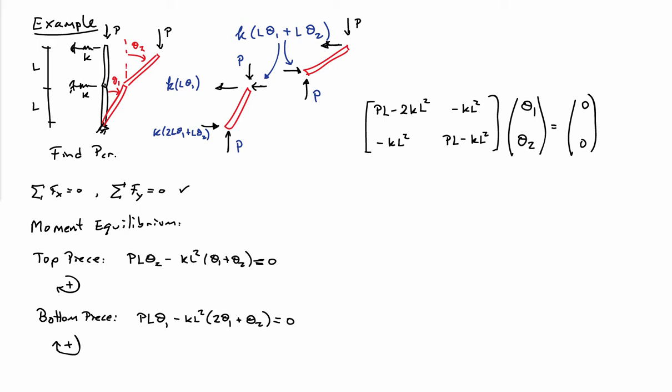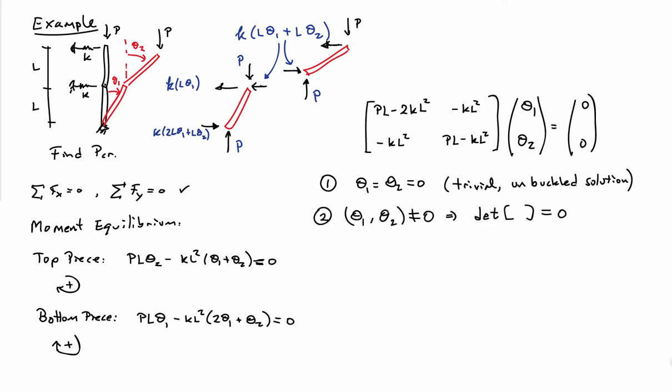Rewriting the equilibrium equations and factoring out the thetas, I have a matrix times the vector [theta 1, theta 2] — these are my equilibrium equations. What I'm looking for is the situation where theta 1 and theta 2 are not necessarily equal to zero. If I pick theta 1 = theta 2 = 0, I satisfy these equations identically, but I'm interested in the non-trivial solution. I have a set of homogeneous linear equations with two possible solutions: the trivial unbuckled case (theta 1 = theta 2 = 0), and a non-trivial solution requiring that the determinant of the matrix be equal to zero. That's the condition for a non-trivial solution for homogeneous linear equations.